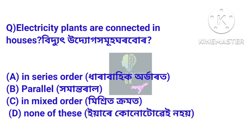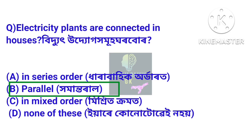Electricity plants are connected in houses in which way? Answer: Electrical appliances in homes are connected in parallel.